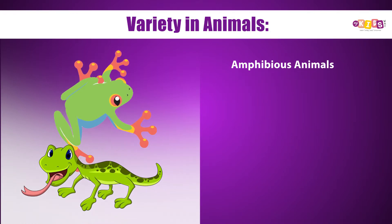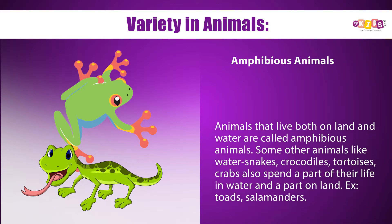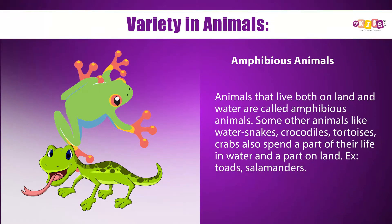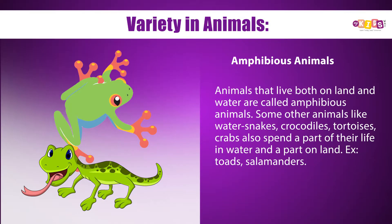Amphibious animals: Animals that live both on land and water are called amphibious animals. Some animals like water snakes, crocodiles, tortoises, and crabs also spend part of their life in water and part on land. Examples include toads and salamanders.